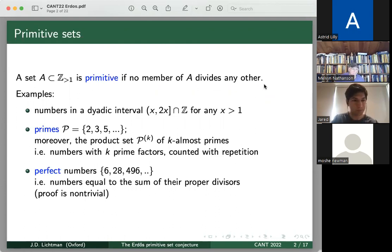Some interesting examples of primitive sets include numbers in a dyadic interval from x to 2x, where we leave out one of the endpoints. Such a dyadic interval is primitive because if you take any number n between x and 2x, its smallest multiple is 2n, which will then fall outside the dyadic interval. So no integer in it will divide each other.